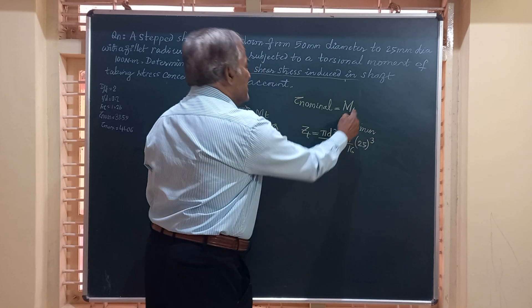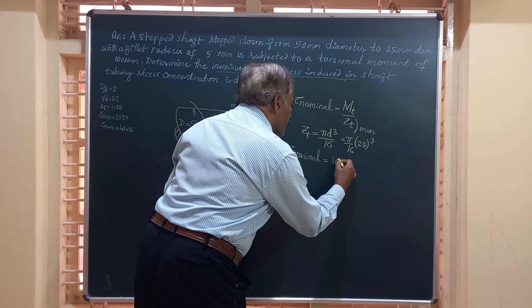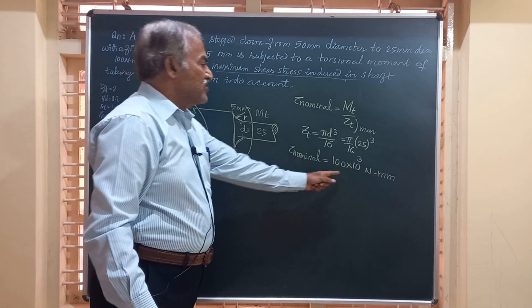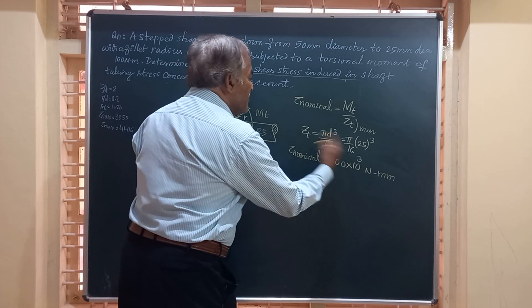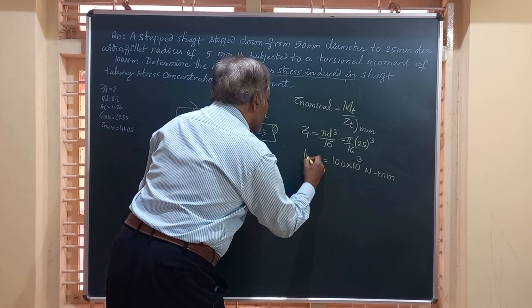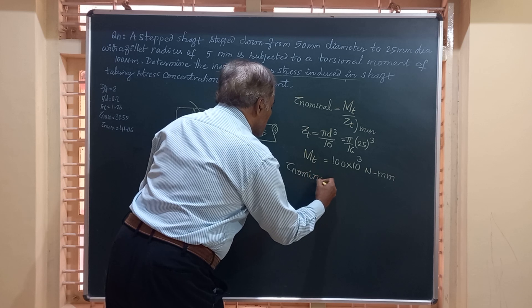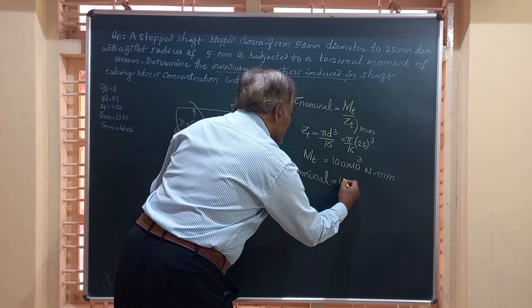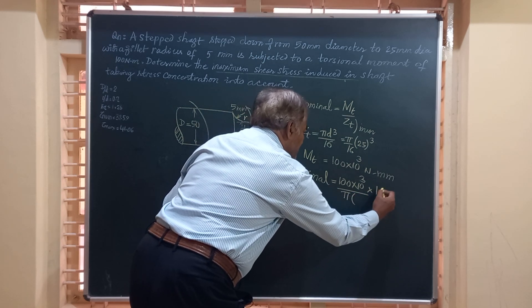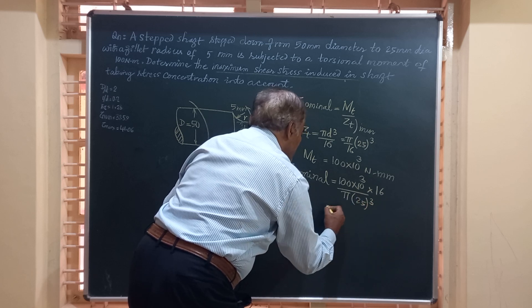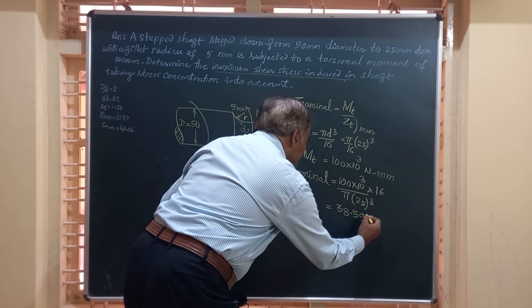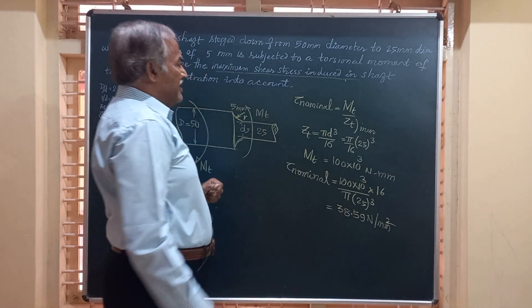Therefore, tau_nominal equals MT divided by ZT, where MT is 100 N·m converted to 100 × 10³ N·mm, divided by pi/16 multiplied by 25 cubed. This value of tau_nominal works out to 38.59 Newton per mm squared.